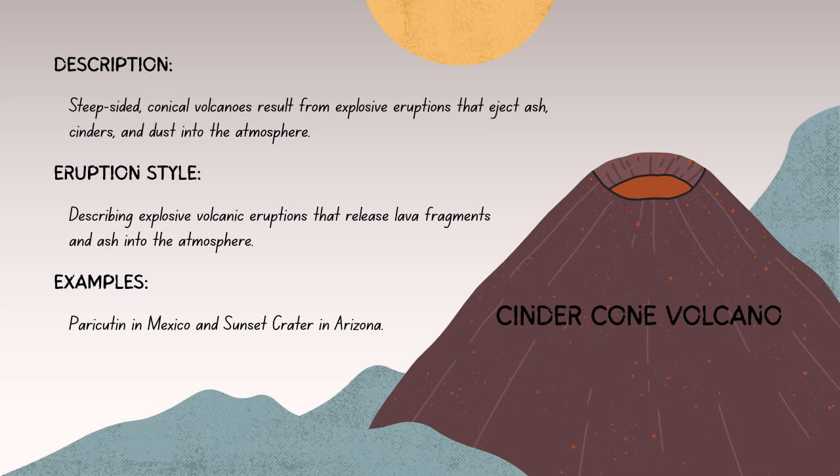Unlike shield volcanoes, most cinder cone volcanoes have a single vent or central opening from which volcanic material is ejected. Cinder cone volcanoes have steep slopes due to the accumulation of loose volcanic material. The angle of these slopes is often close to the angle of repose — the steepest angle at which loose material can remain stable.